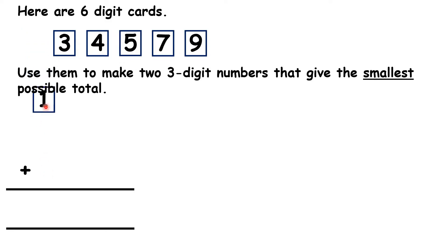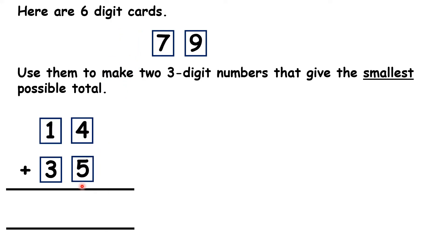So let's move one to the hundreds of the first number. Then we can move three, our next smallest digit, to the hundreds of the number we're adding. Then we can have four in the tens, and five in the tens, because they're our middle digits.